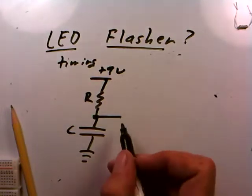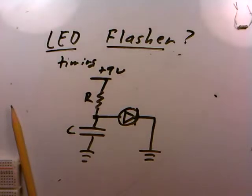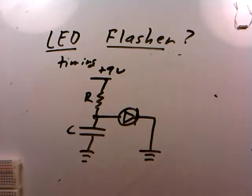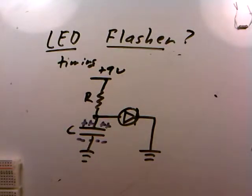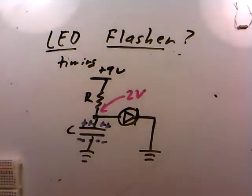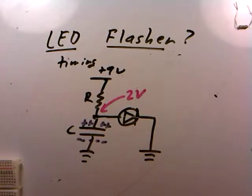Suppose we take a standard RC circuit and put an LED across the capacitor. When the capacitor is uncharged it has zero volts, so the LED is off. As the capacitor gains charge its voltage rises, and since LEDs turn on at about two volts, when the charging cycle reaches two volts the LED comes on. Then the charge drains off through the LED to ground, the capacitor empties, the LED goes off, and the cycle repeats — or so the theory goes.